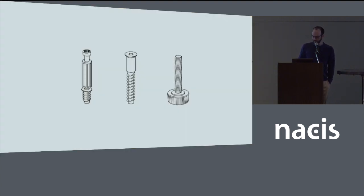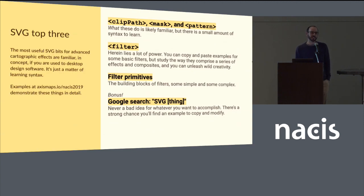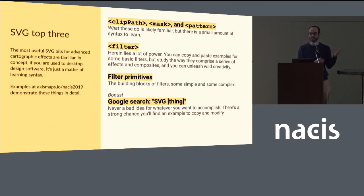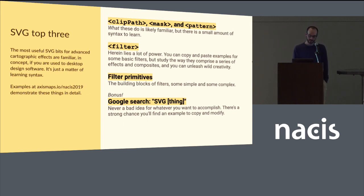A few things that are going to come up a lot in SVG examples: clipping paths, masks, and patterns — if you're an Illustrator user, that's going to be pretty familiar, just some syntax you'll have to learn. Filters are also probably familiar — things like a drop shadow. But you can get really powerful with filters in SVG because they're made up of filter primitives, things like blur or flood fill color, and you can start combining those with masks and all kinds of stuff to build really complex, beautiful effects. And my bonus fourth item is Google — if you ever want to do a thing, there's probably an example. Just search.